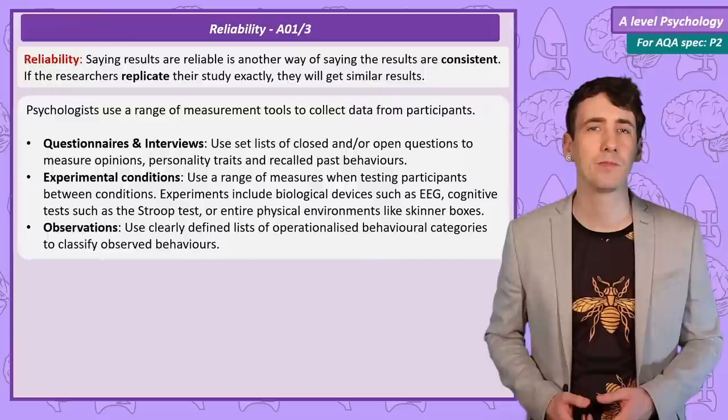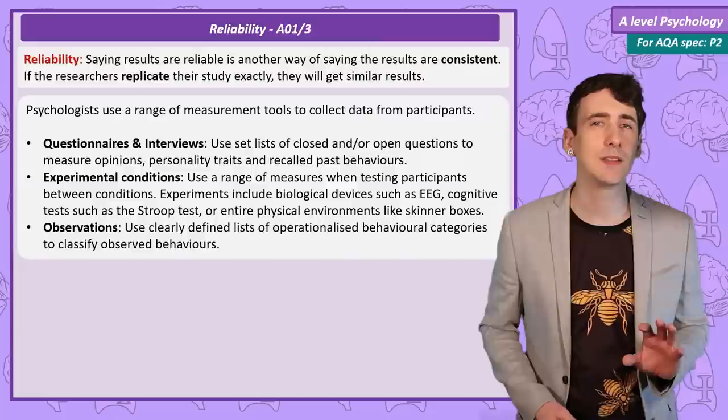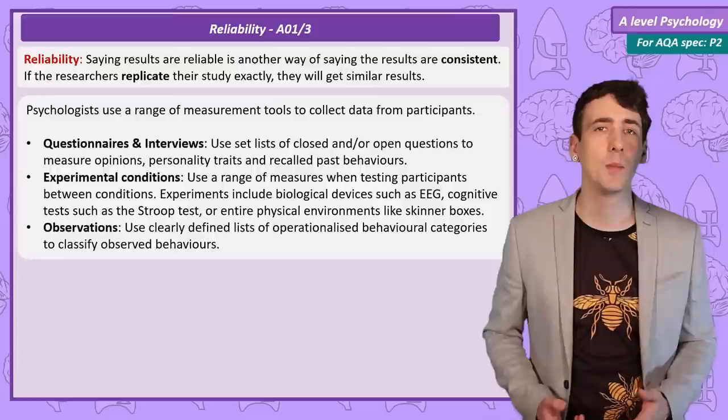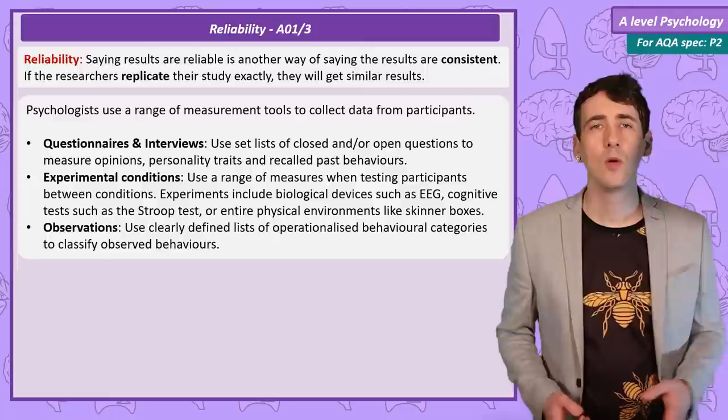Psychologists would hope that they or another researcher using the same methods would make the same measurements if they conducted the same study, on the same people, at a different time. But being sure of the reliability of a psychological measure is a little more difficult than being sure of rulers and scales, because researching behaviours like personality and attachment are vaguer than length or weight.